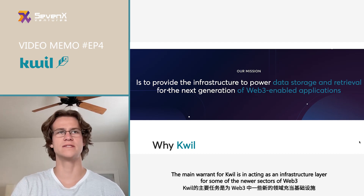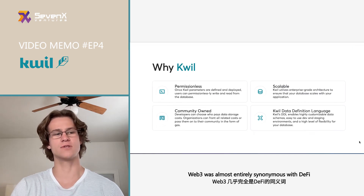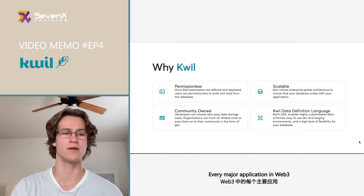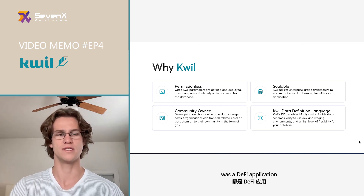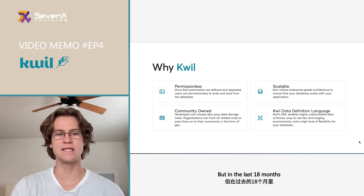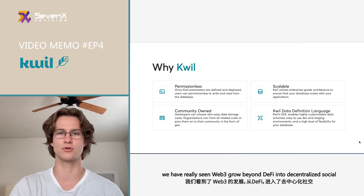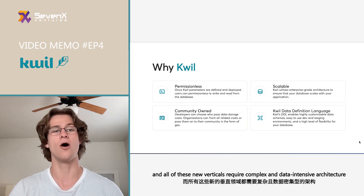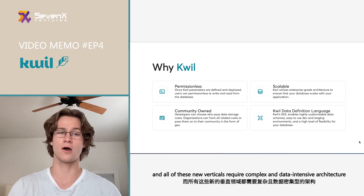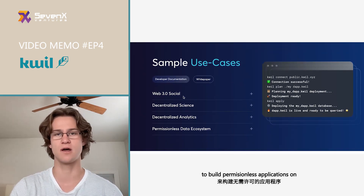The main warrant for Quill is acting as an infrastructure layer for some of the newer sectors of Web3. Prior to about 18 months ago, Web3 was almost entirely synonymous with DeFi — almost every major application was a DeFi application. But in the last 18 months, we've really seen Web3 grow beyond DeFi into decentralized social, decentralized gaming, decentralized science, and decentralized analytics. All these new verticals require complex and data-intensive architecture to build permissionless applications on.